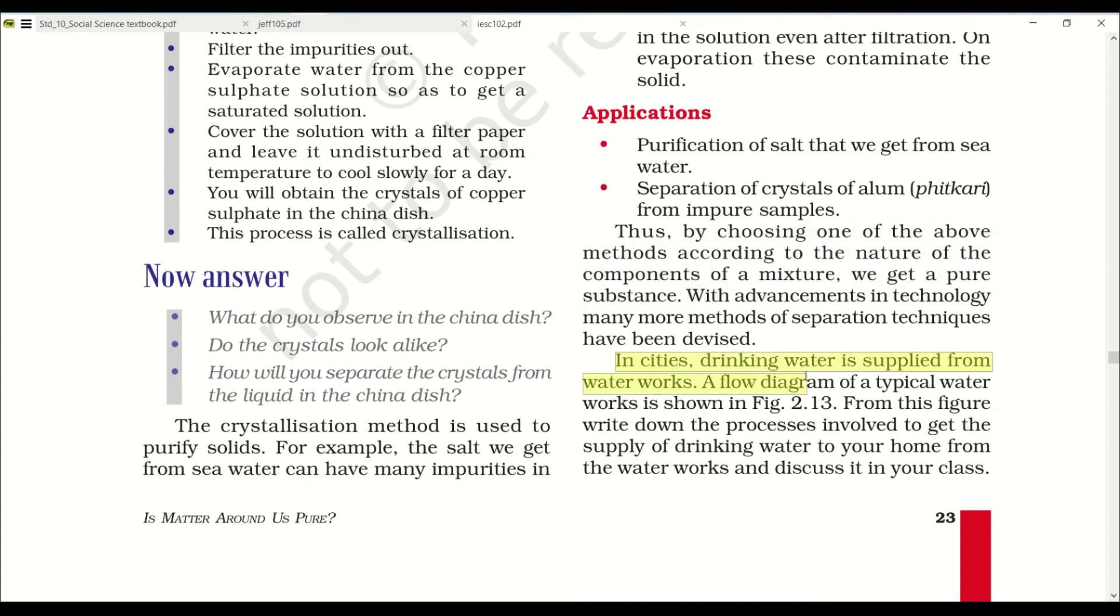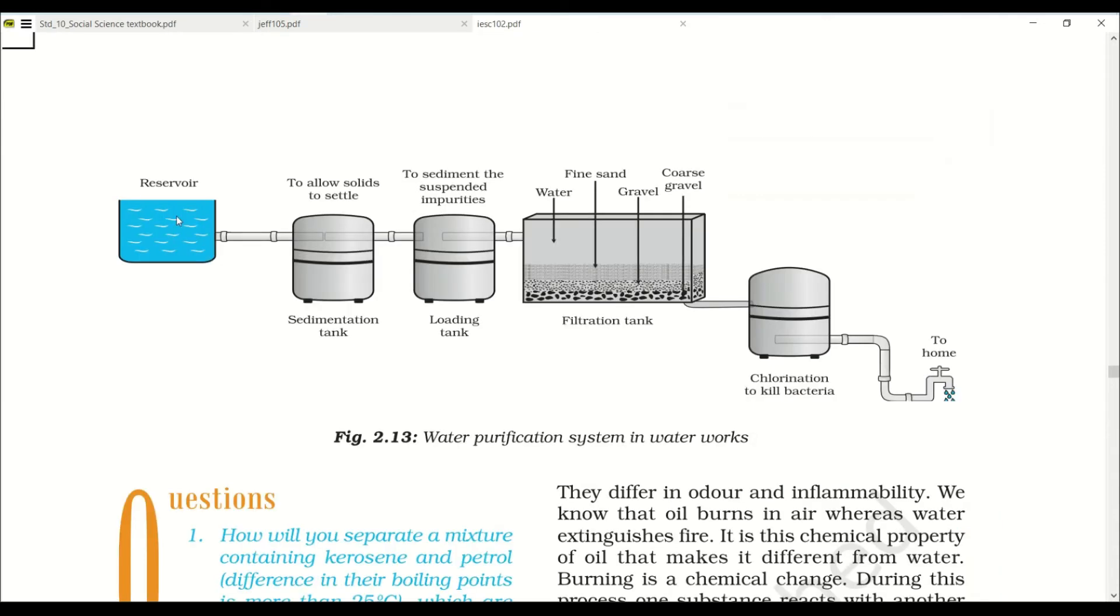In cities, drinking water is supplied. A diagram of a typical water works is shown in figure 2.13. Here you can see water is collected from a reservoir. It is collected in the sedimentation tank where the water is allowed to settle down. Most of the impurities settle down over here. Water is then transferred to a loading tank where suspended impurities are removed. After that, the water is collected in the filtration tank. The tank contains fine sand, gravel and coarse gravel through which water is passed so that most impurities are removed. It is then collected in the chlorination tank to kill bacteria, which is then reached to our homes.